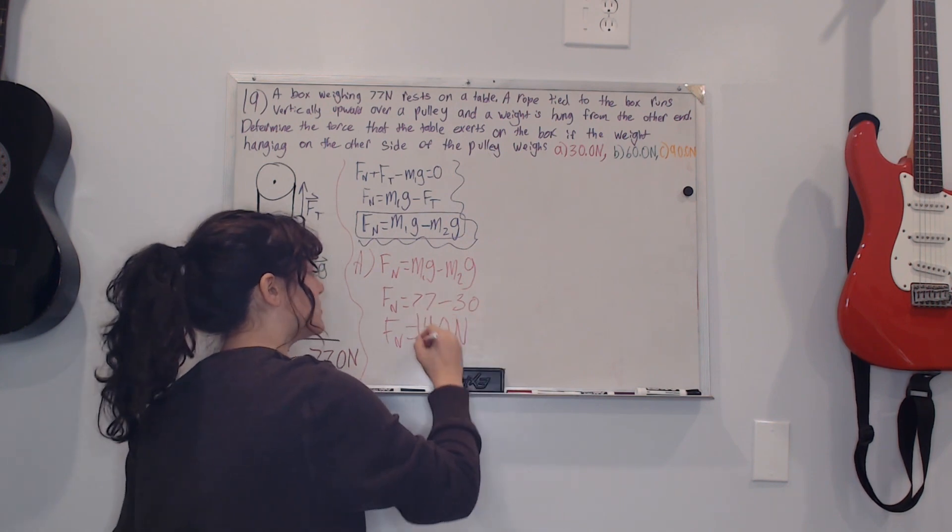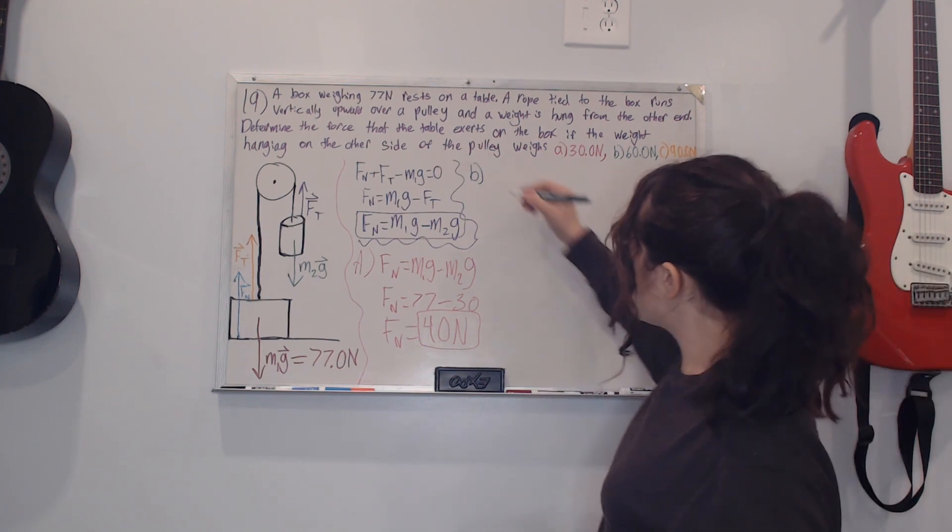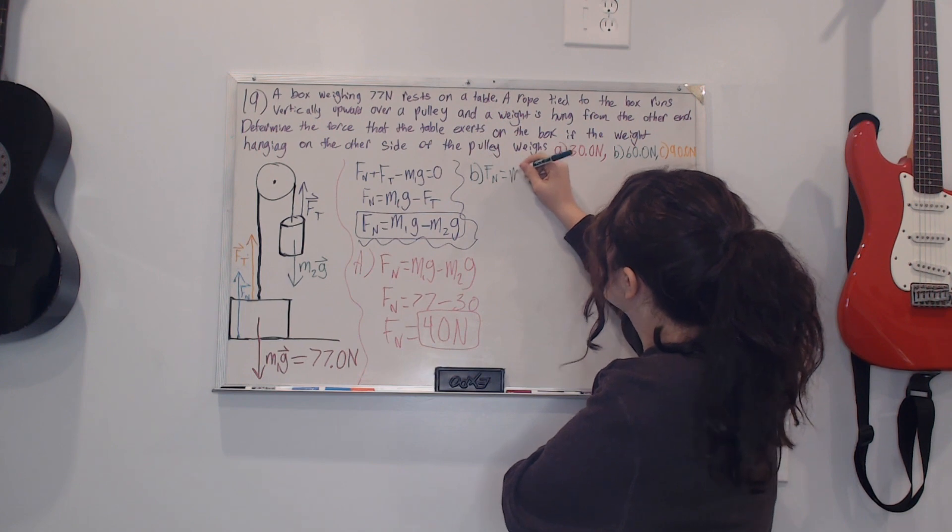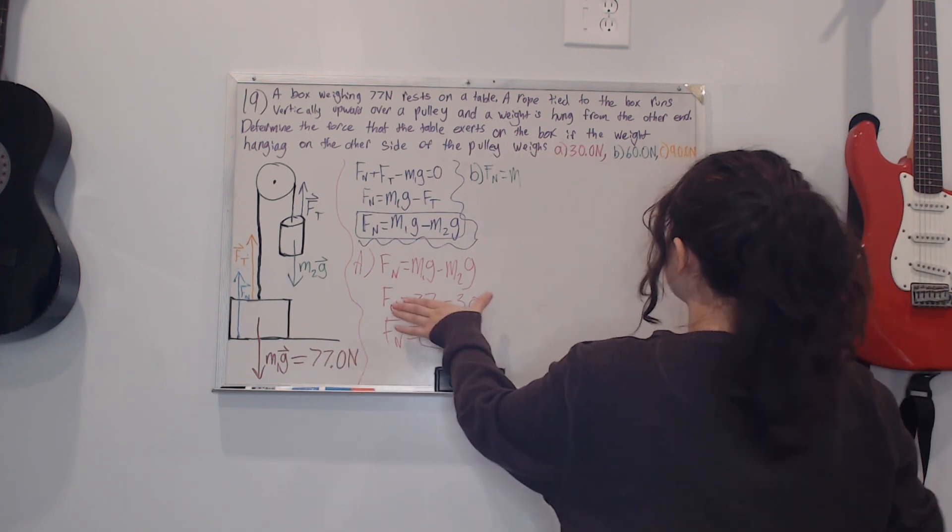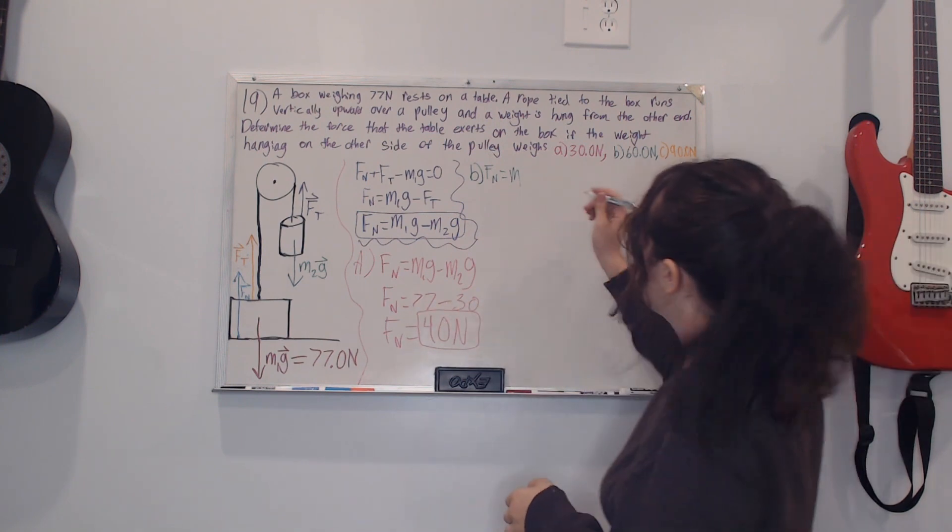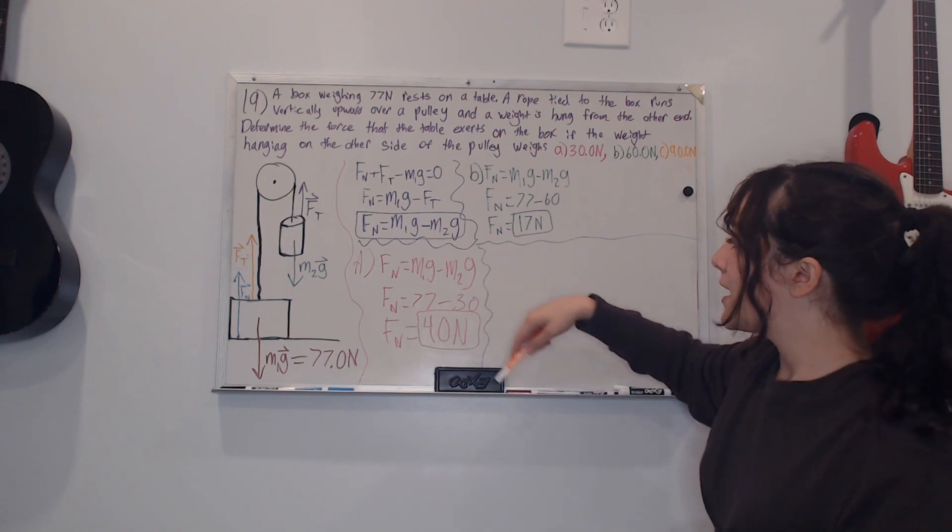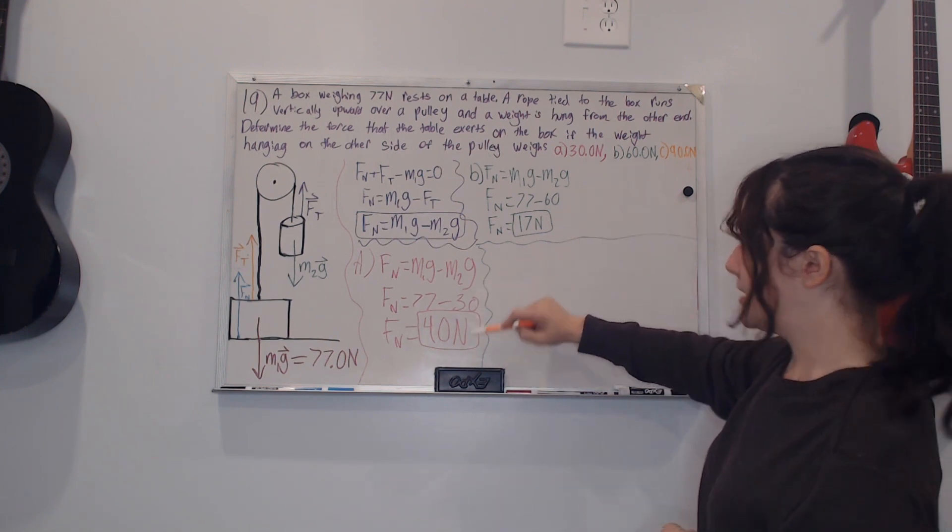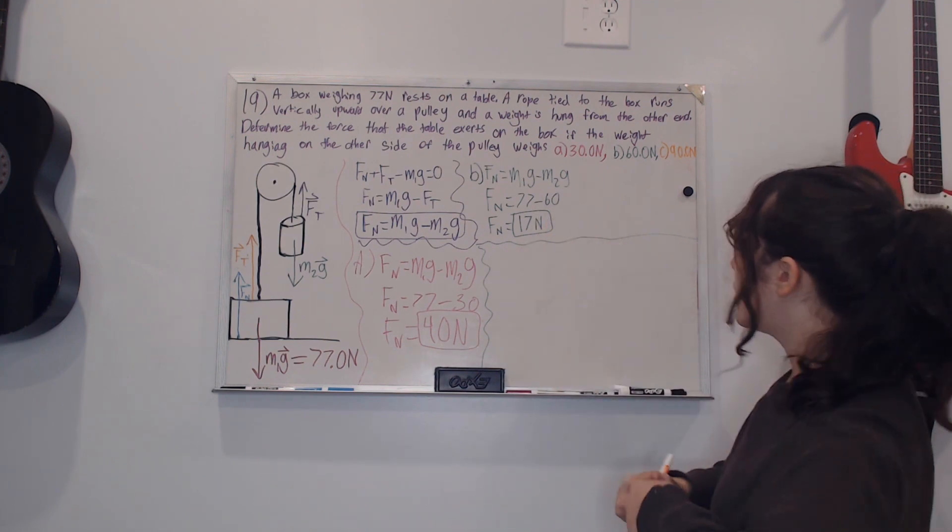For part b we repeat the exact same thing. We rewrite what we got here and then we just plug in that same exactly like we did here except instead of 30 we use 60. So all I did was repeat the exact same steps from here except for replacing the 30 that I put here with the 60 like part b says to do.